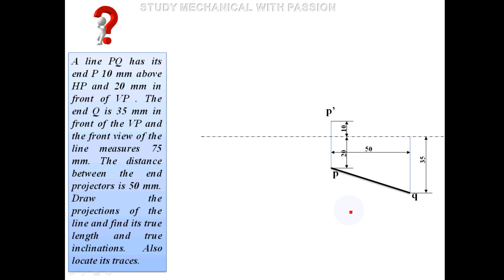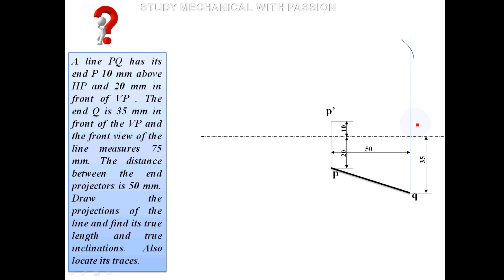We mark Q and Q-dash accordingly. The front view measurement is 75mm, so P-dash Q-dash equals 75mm. We now have the top view PQ and the front view P-dash Q-dash drawn.